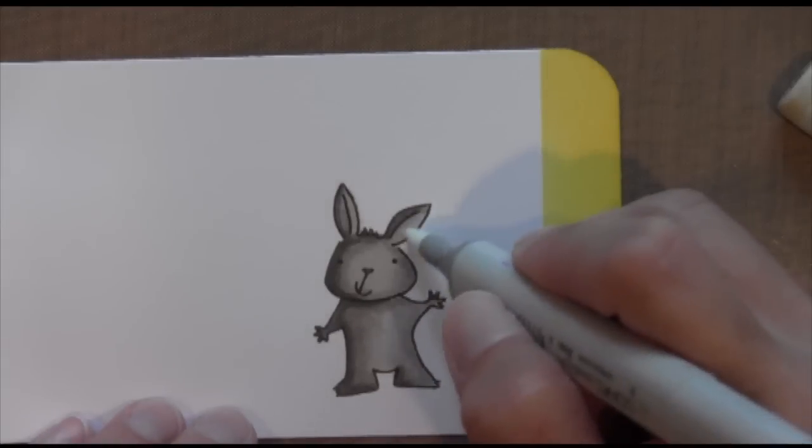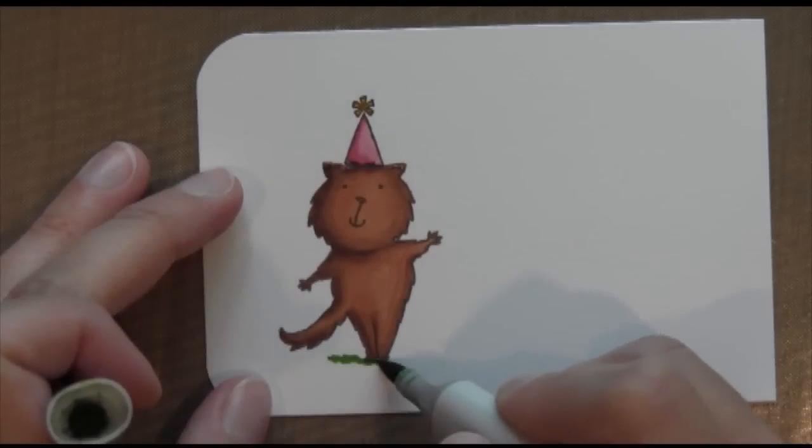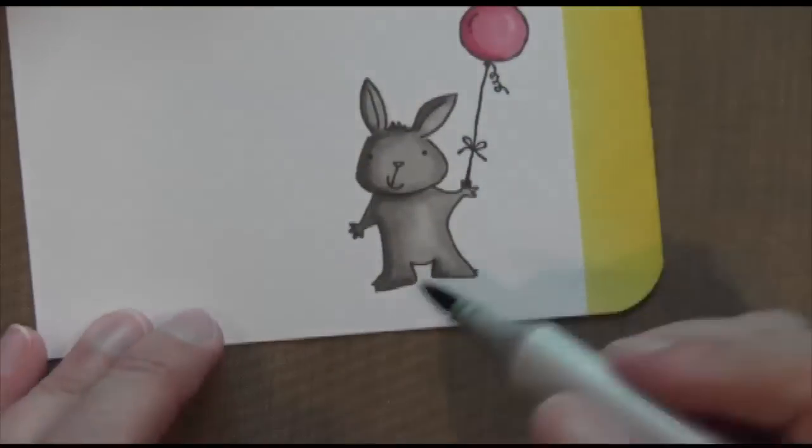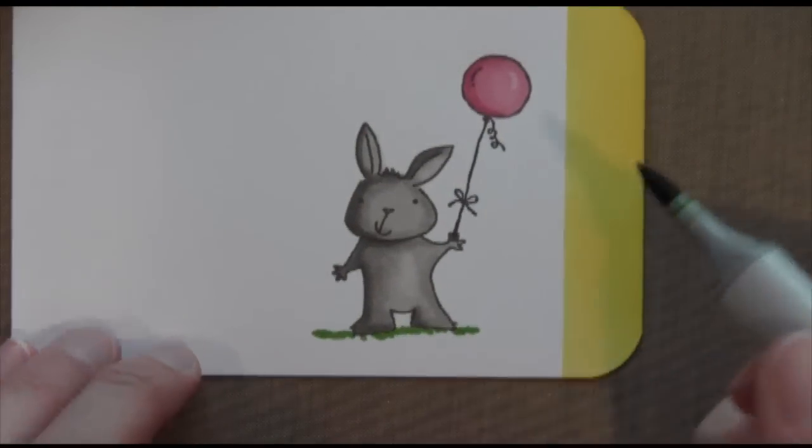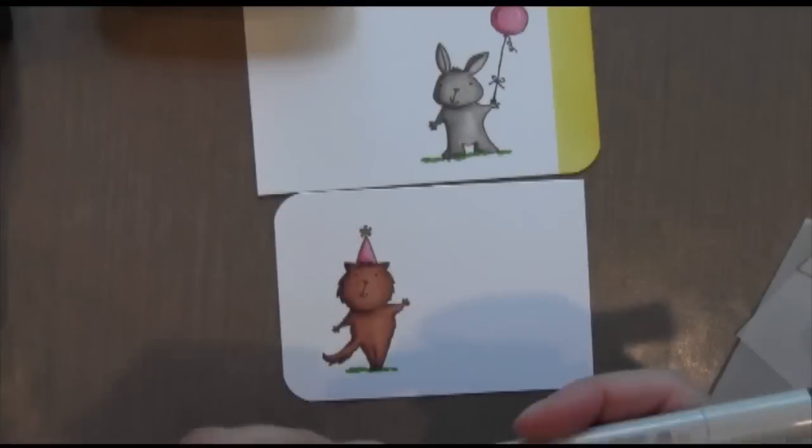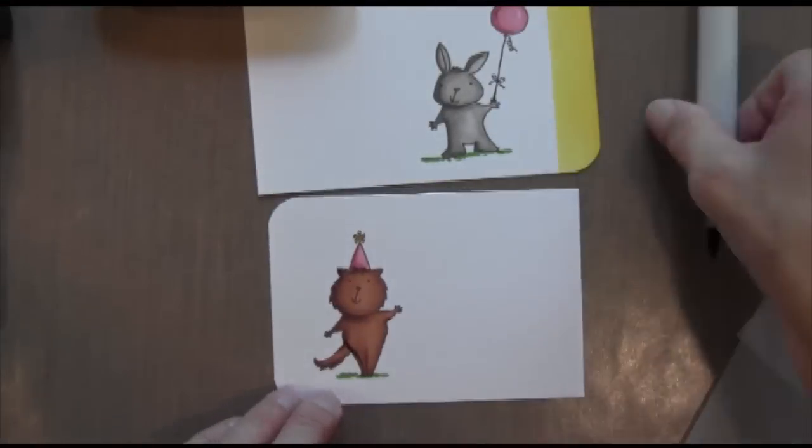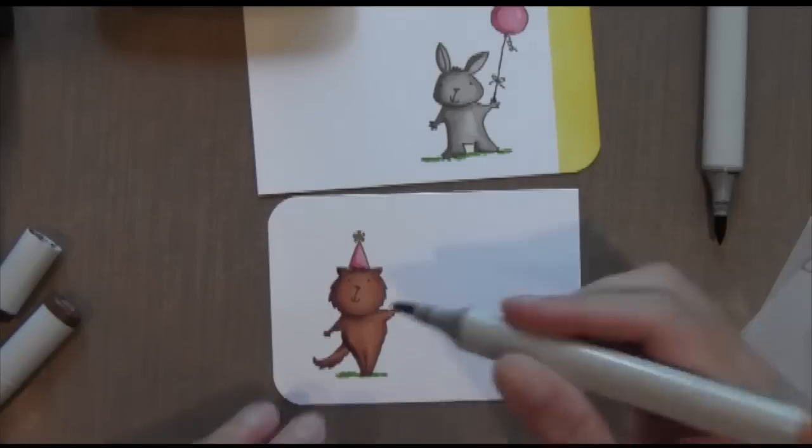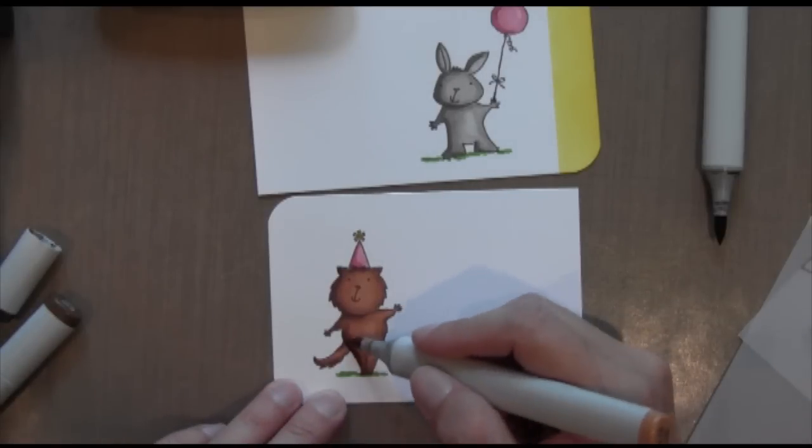Now with the bunny I went in with a colorless blender and I created a little bit more light on his body. Okay, just a little bit of grass so they don't look like they're floating. And here I am going back in to create that little shadow there you can see. Much better.